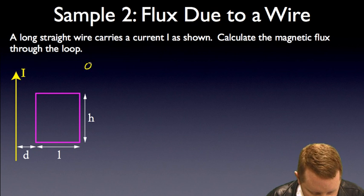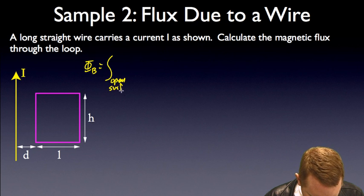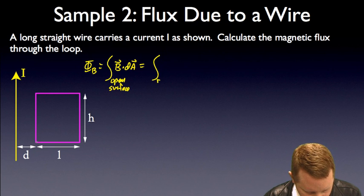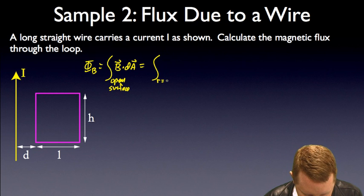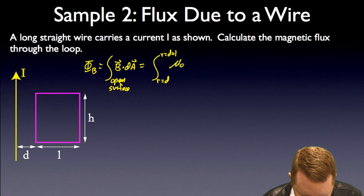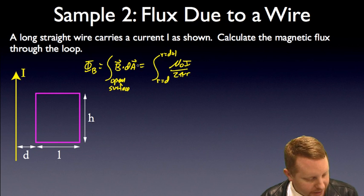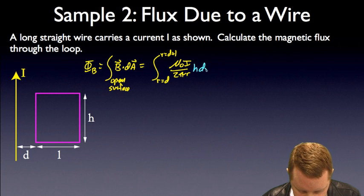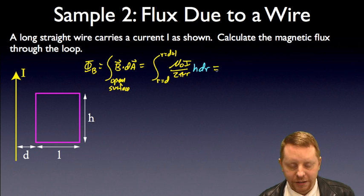Well, we'll start out the same way again. Our total magnetic flux φ_B is going to be the integral over the open surface of B dot dA, which will be the integral from R equals d to R equals d plus L of our magnetic field strength. That's μ₀I over 2πR, magnetic field strength due to a current carrying wire, times dA. Well for a case of dA, we're going to have dR in the x direction and h a constant in the y direction, so h dR.